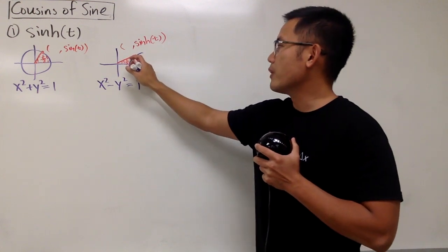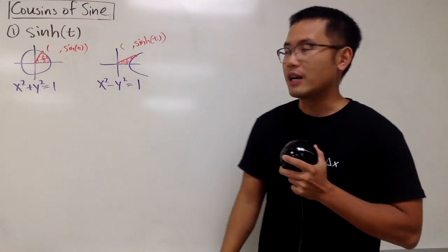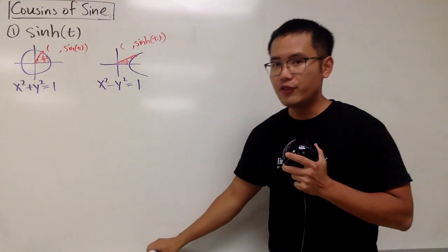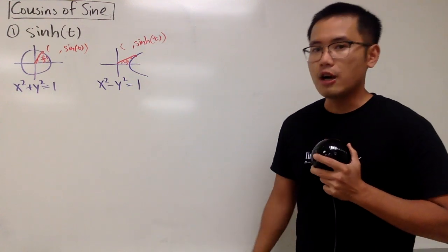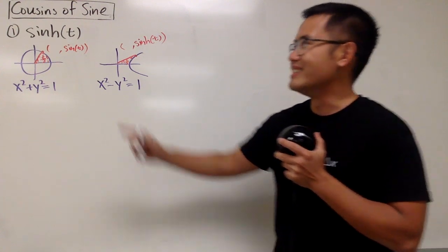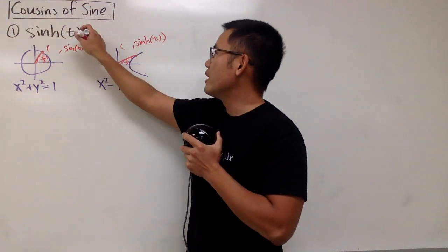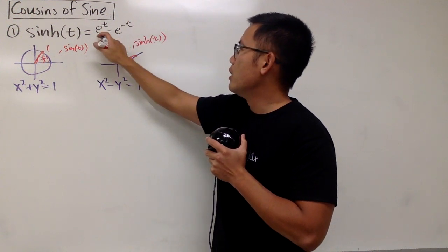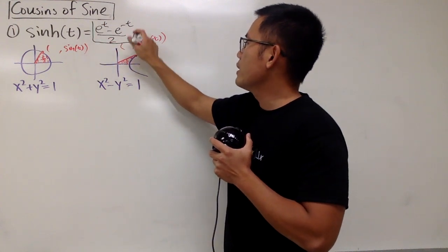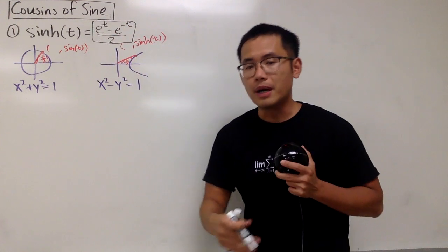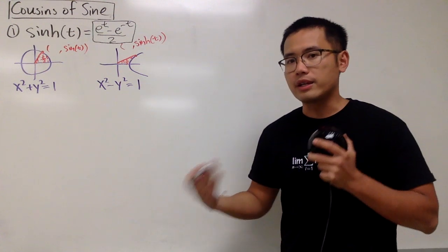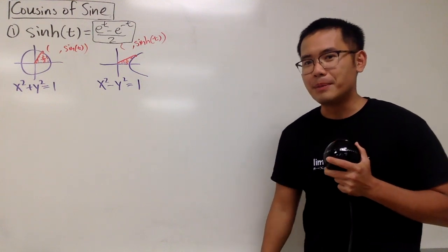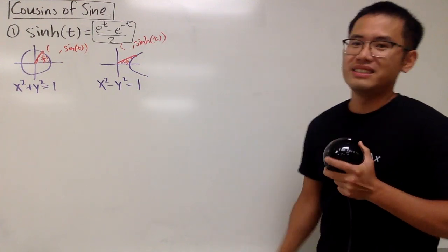Very cool — if you look at it like this, you see they are very, very close to each other. Similar ideas. We can actually do it better because we have a really nice parametric definition: sinh(t) equals e to the t minus e to the negative t, all over 2. This is the one you want to use when differentiating, proving identities, etc. This is the first version — the hyperbolic sine function, the cousin of sine.